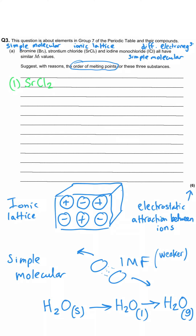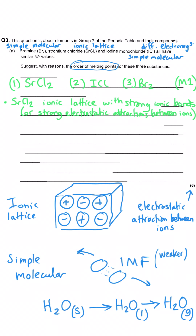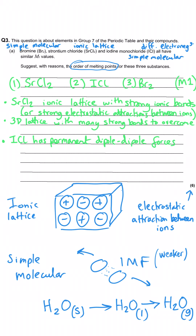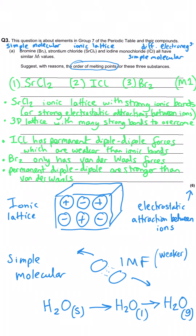So our hierarchy is: strontium chloride first, then ICl with its permanent dipole-dipole forces, then bromine in third place — that's our first mark just for the order. For the reasons: strontium chloride has an ionic lattice with very strong electrostatic attractions between ions, and there are many such bonds to overcome, explaining its high melting point. Then we say permanent dipole-dipole forces in ICl are stronger than the van der Waals forces present in bromine — covering the remaining marks for a total of six.